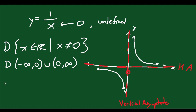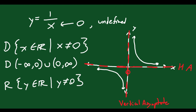For the range of y equals 1 over x, y exists in the set of real numbers such that y cannot be zero either. You can write the range as negative infinity to zero, union with zero to infinity.